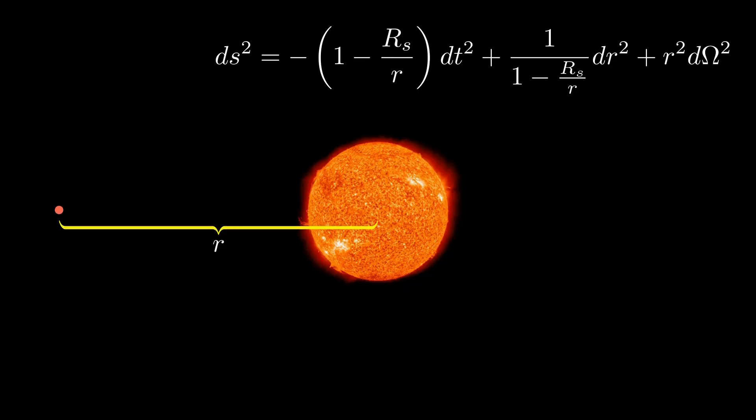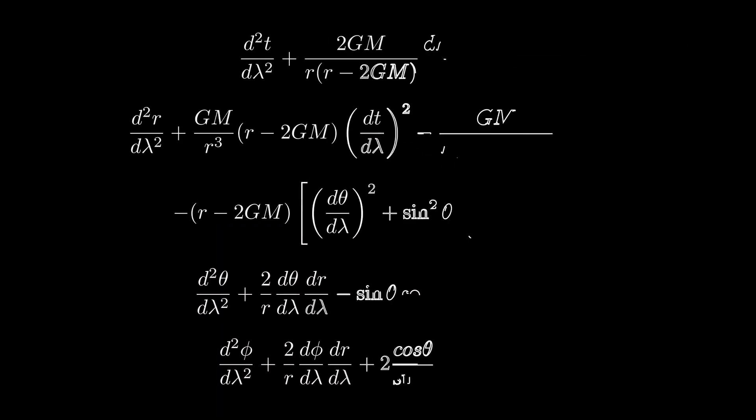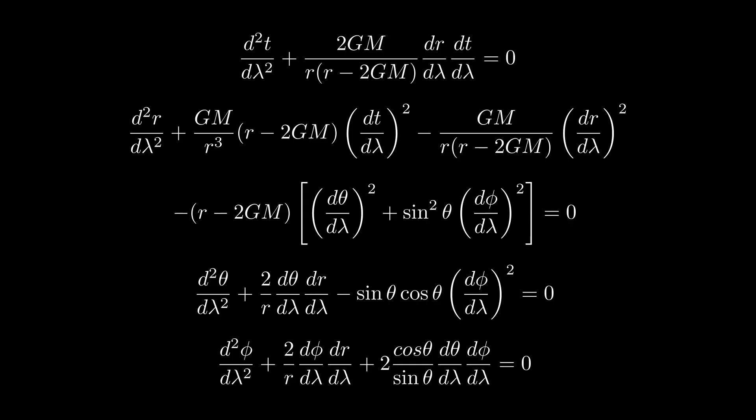With this metric, we can compute the Christoffel symbols we had previously mentioned and find the geodesic equation for each value of mu. Since we are now in spherical coordinates, we have r, theta, and phi instead of x, y, and z. That gives four coupled second-order differential equations. It seems like solving these equations is going to be impossible, but we can use some tricks.